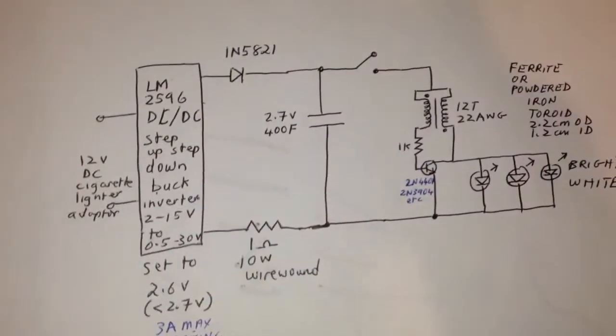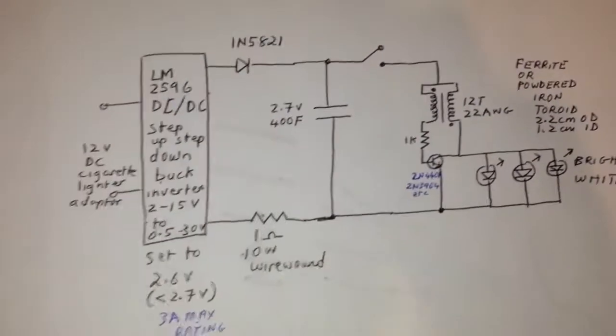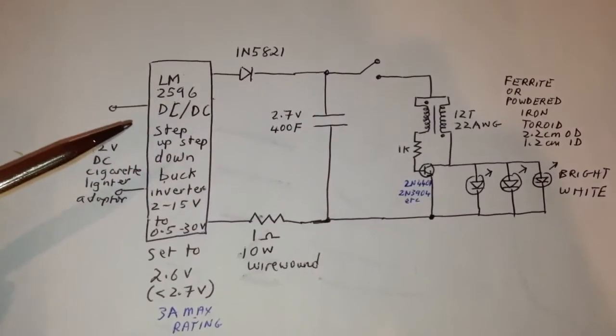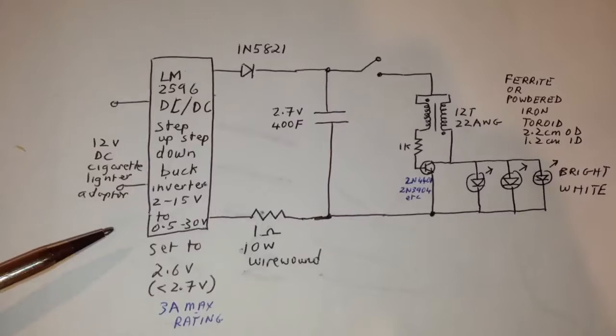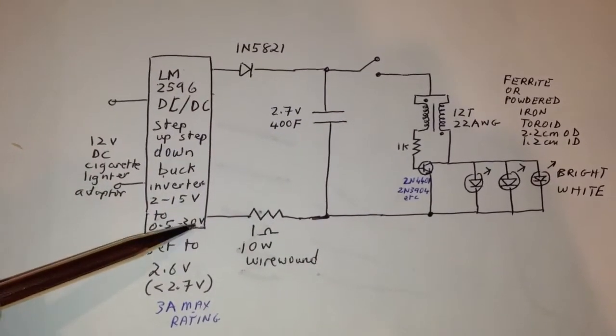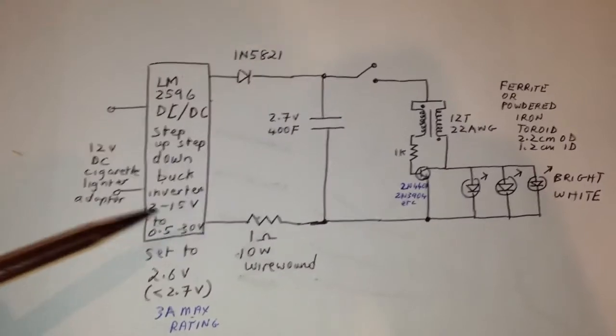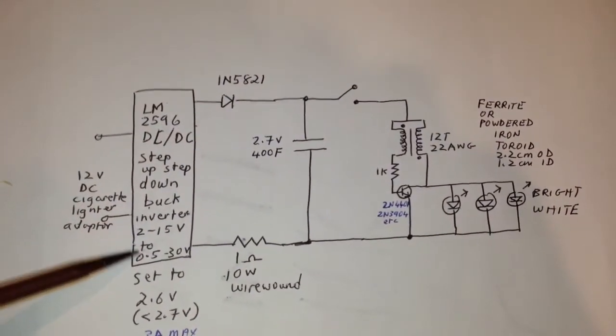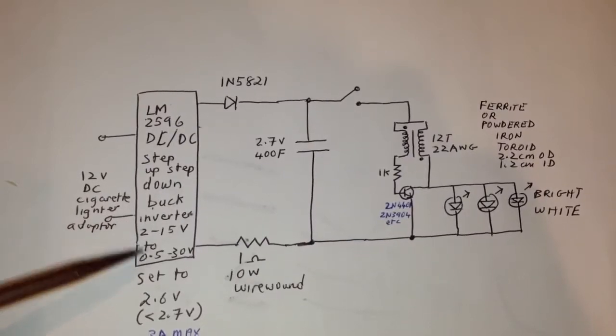So let me just talk to you a little bit about this circuit here. This is a standard LM2596 DC to DC step up step down inverter. You put 2 to 15 volts DC in, you get 0.5 to 30 volts DC out and it's very good error on that. It's almost just a few percent off.